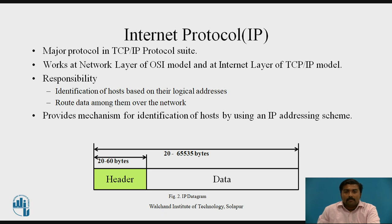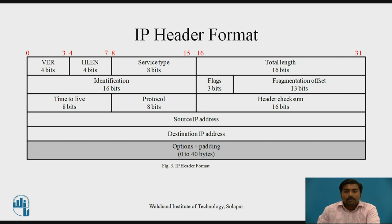The IP header format is 20 to 60 bytes, and the data portion is 20 to 65535 bytes. The mandatory 20 bytes are contained in the fields: version, header length, service type, total length, identification, flags, fragmentation offset, time to live, protocol, header checksum, source IP, and destination IP. The remaining options plus padding field is either 0 or 40 bytes, making the total IP header either 20 bytes or up to 60 bytes.